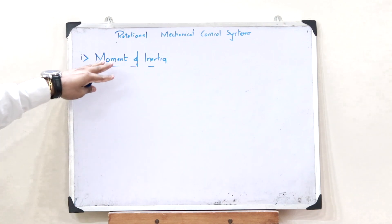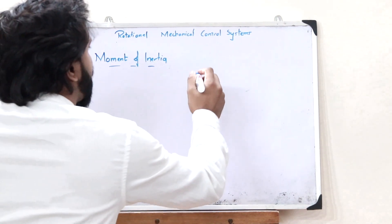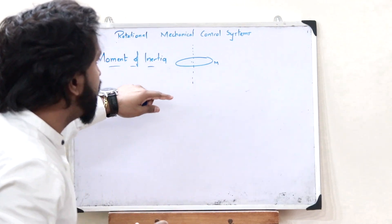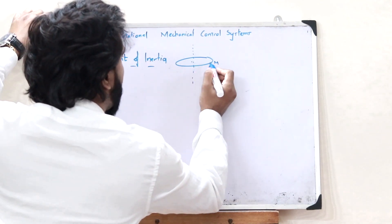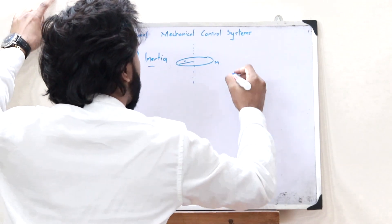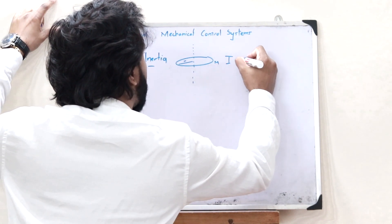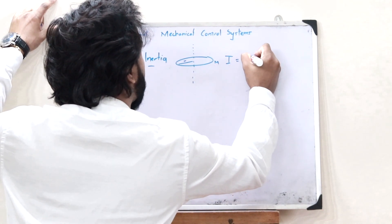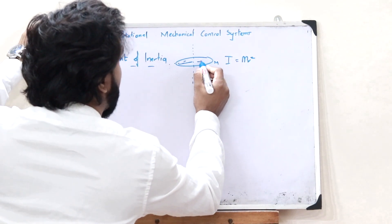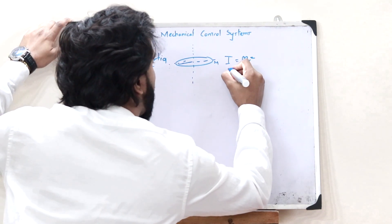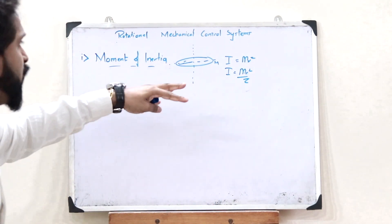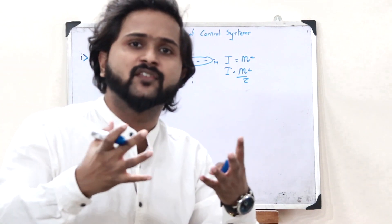Moment of inertia is actually an interesting term. Consider a particular ring of mass m. The moment of inertia of this ring having mass m and radius r along this particular axis is given as I = mr². But if we are taking the moment of inertia along this other particular axis, then the moment of inertia would be I = mr²/2.